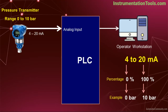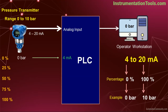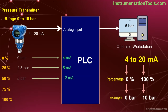Apply the process pressure in terms of 0%, 25%, 50%, 75%, and 100% to the pressure transmitter. If the process pressure is 0 bar, the transmitter sends 4 mA and the PLC displays 0 bar. At 25%, that is 2.5 bar, it sends 8 mA and displays 2.5 bar. At 50%, that is 5 bar, it sends 12 mA and displays 5 bar. At 75%, that is 7.5 bar, it sends 16 mA and displays 7.5 bar.